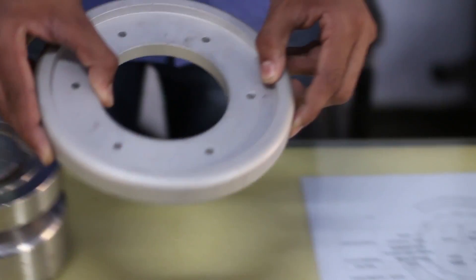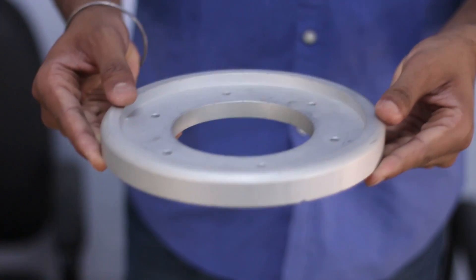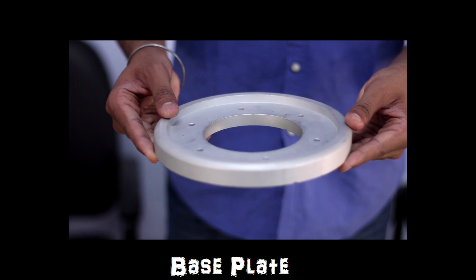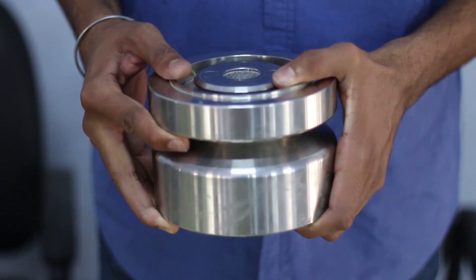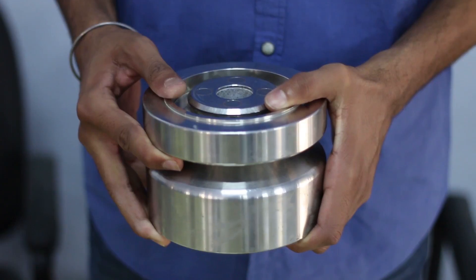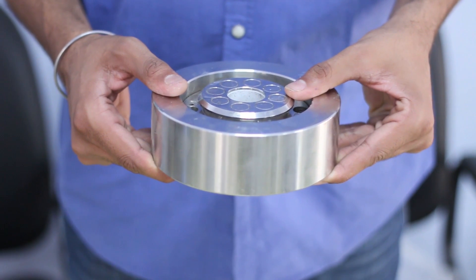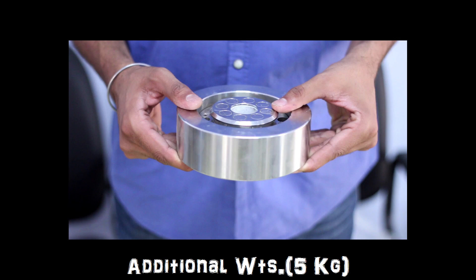This is the base plate. This is the base weight of 10 kg. These are the additional weights of 5 kg each. There are two of these additional weights so that the total weight can go up to 20 kg.